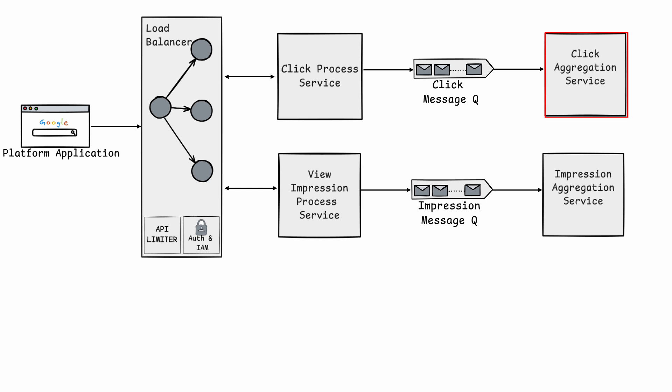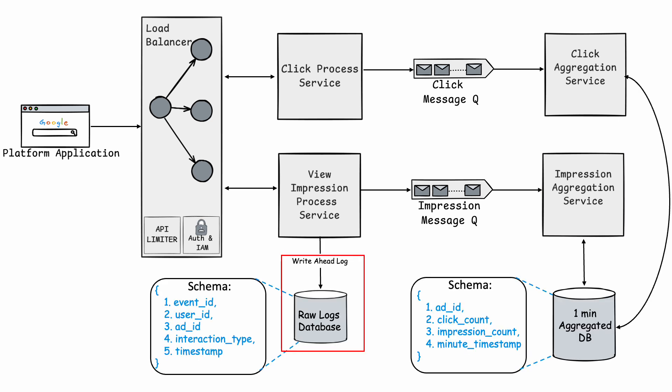The click aggregation service aggregates events based on ad ID for a one-minute period — one minute because that's the maximum latency our system can have. Similarly, the view impression processing service processes events and sends them to the impression message queue, which forwards to the impression aggregation service that aggregates by ad ID for a one-minute period. Next, we add a write-ahead log that writes raw request records to a raw logs database before writing to the main database. We also add a 1-minute aggregated database — aggregation services write data 10 seconds before the 1-minute window completes.